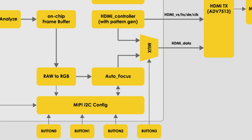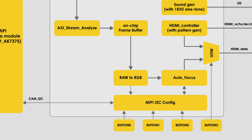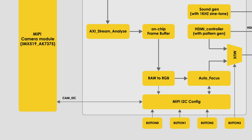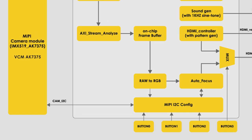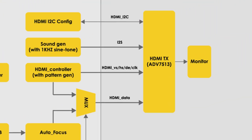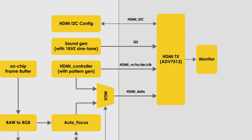The autofocus module calculates the sharpness of the current image. The FPGA uses the MIPI I2C config module to control the VCM via I2C, moving the lens position to the optimal focus position. The HDMI I2C config module initializes the ADV7513 via I2C before the HDMI transmitter outputs the video.